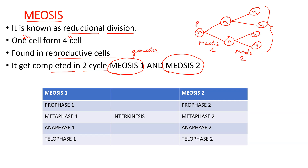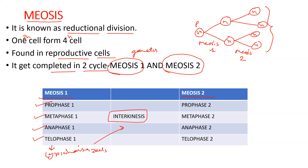Meiosis one goes through four stages: prophase one, metaphase one, anaphase one, and telophase one, followed by cytokinesis, forming two cells. Those two cells then enter interkinesis, which is a short-lived phase where no DNA replication takes place, before quickly entering meiosis two.